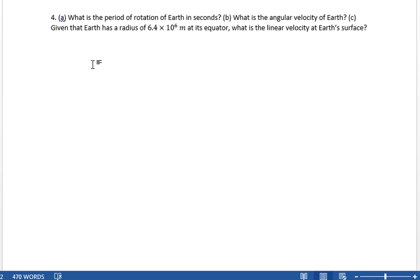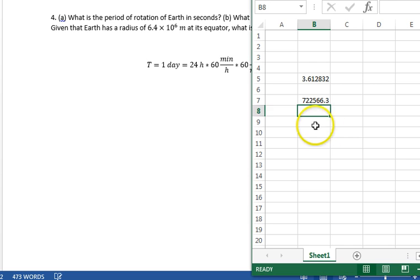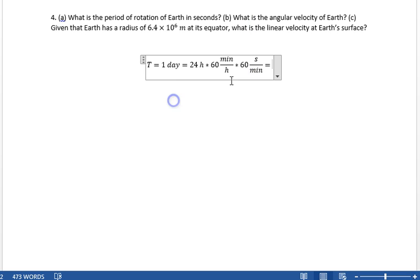So the period of rotation equals one day, which is 24 hours, right? 24 hours times, and they want this in seconds, 60 minutes per hour, times 60 seconds per minute. That equals 24 times 60 times 60. So 24 times 60 times 60 is 86,400 seconds.